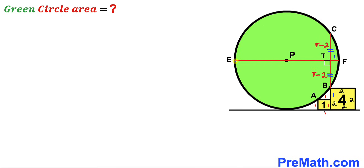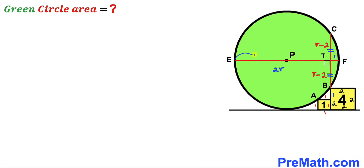The diameter EF has length 2r. Since segment TF is 1, segment ET equals 2r minus 1.